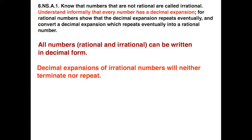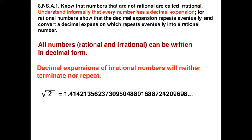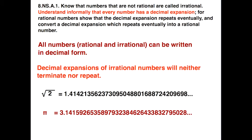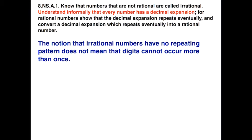Irrational numbers' decimal expansions are going to neither terminate nor repeat. Common examples are many of our square roots. For example, the square root of 2 is 1.4142 and then it just keeps going — it does not terminate and there is no repeating pattern. Pi is another common example: Pi equals 3.14159, et cetera. Again, it keeps going with no repeating pattern and it doesn't terminate. The notion that irrational numbers have no repeating pattern doesn't mean that digits cannot occur more than once.